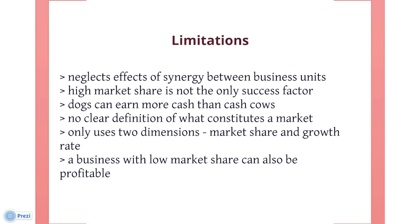While the BCG matrix helps companies properly allocate resources, there are some limitations. These include: it neglects effects of synergy between business units; this four-sided approach is considered too simplistic; its lack of detail could miss certain key points; high market share is not the only success factor and does not always lead to high profits; there are high costs also involved with high market share. Dogs can also earn more cash than cash cows, and at times dogs may help other businesses in gaining competitive advantage. There is no clear definition of what constitutes a market. The BCG matrix only uses two dimensions — market share and growth rate — and a business with low market share can also be profitable.